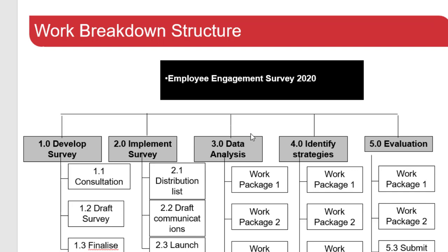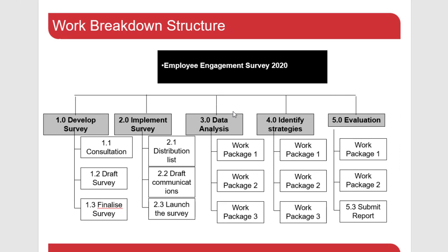So there are two different types of work breakdown structure: product style and process style. You don't do both — you select which one you like best and implement that one. Initially you may try both, but eventually you'll pick one based on your preference. If you're going to have lots of stakeholders reviewing your WBS, just make sure it's easy to understand. In the next video, we'll look at converting the work breakdown structure into a schedule.